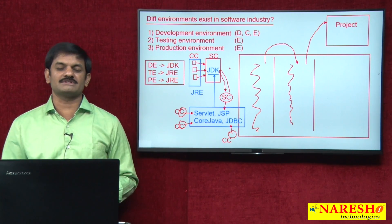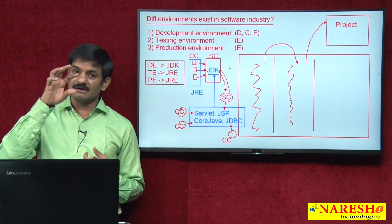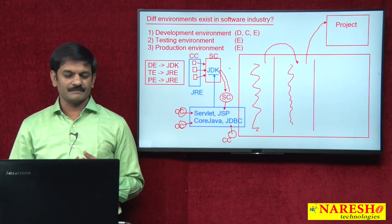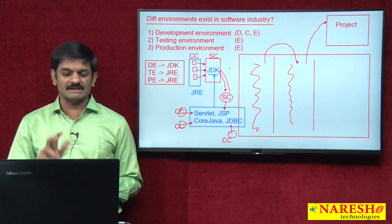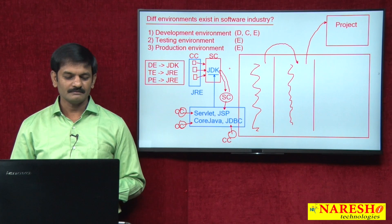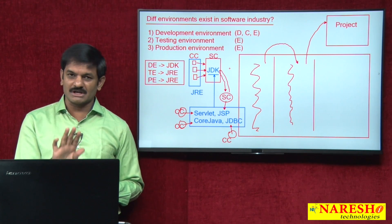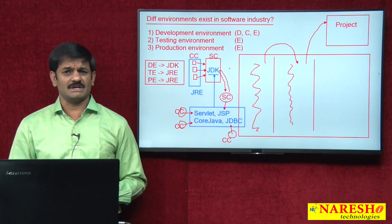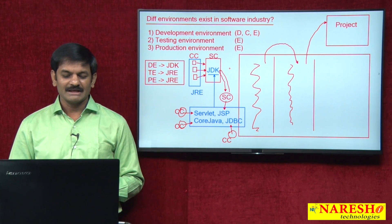Final conclusion: there are two types of Java software — JDK and JRE. In the development environment, both developer computers and the server computer require JDK. In the testing environment, tester computers need JRE, but the server computer needs JDK for JSP. In the production environment, client computers need JRE, but the production server computer also needs JDK for JSP.